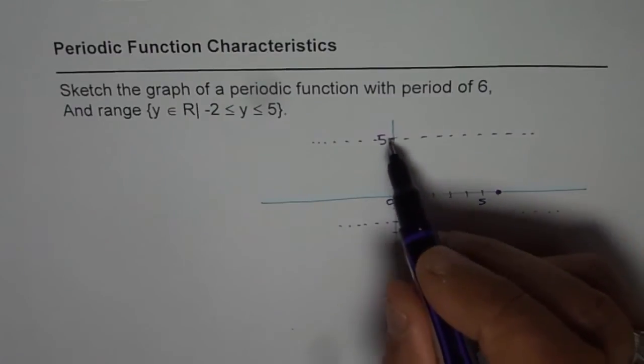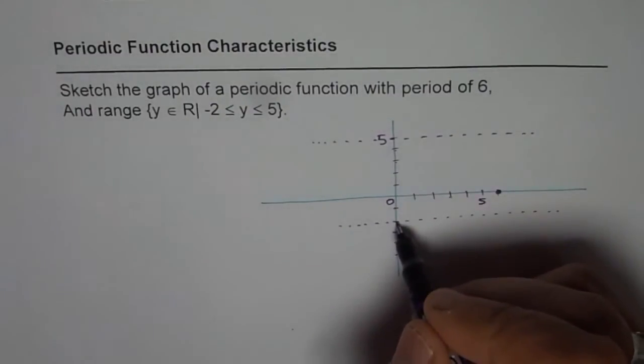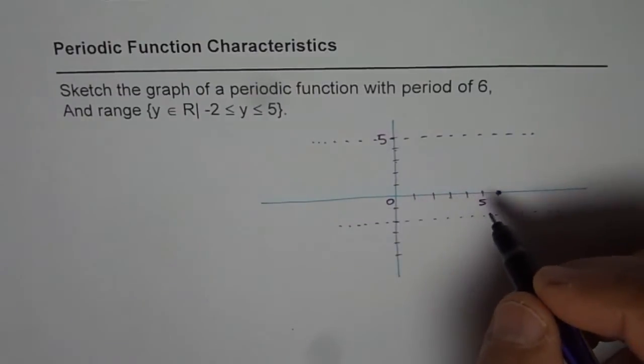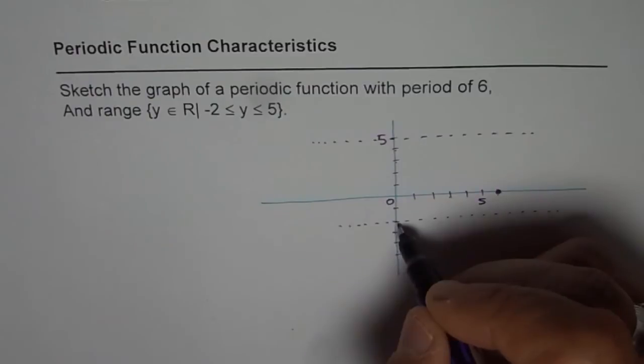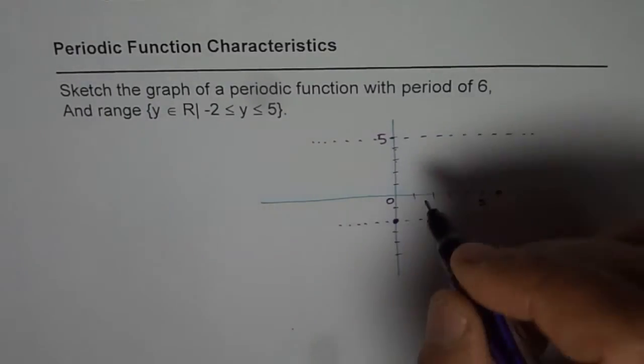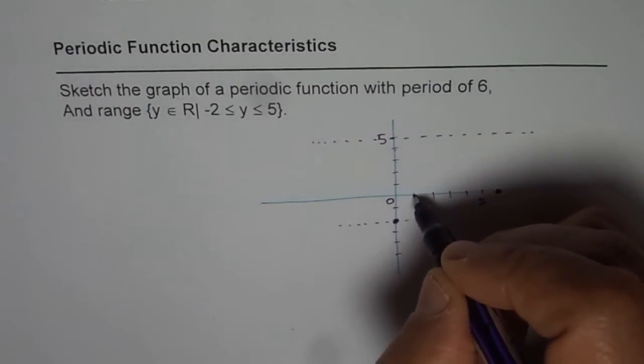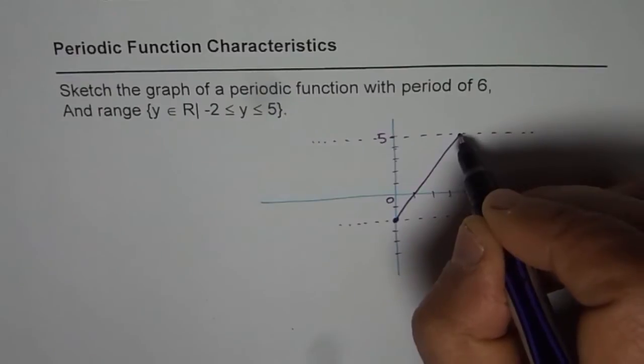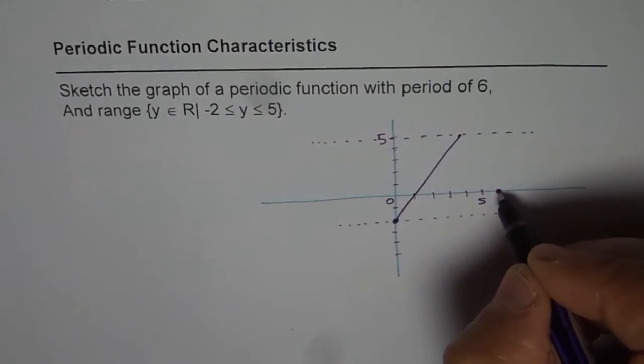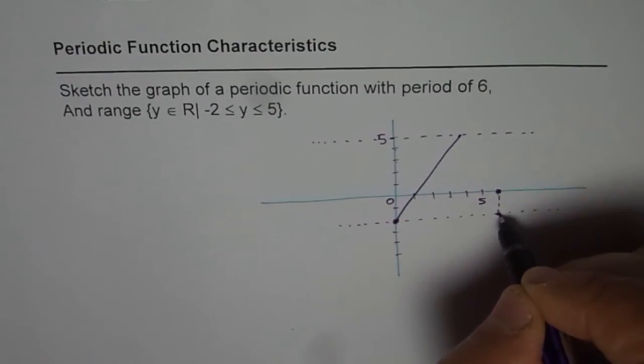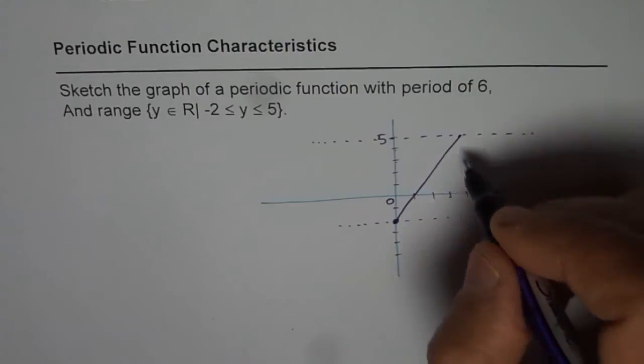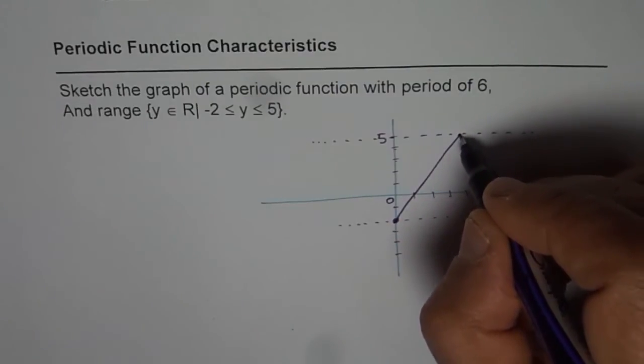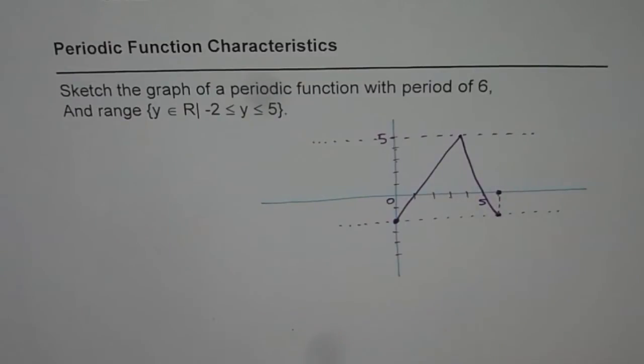Now since we have the maximum and minimum, what we can think about is making a wave. Let's start from here which is the minimum and let's go up somewhere to the maximum and return so that we finish our cycle here when the time is 6. You get the idea. So we can join this and come back to this point. So in that case we have made one cycle.